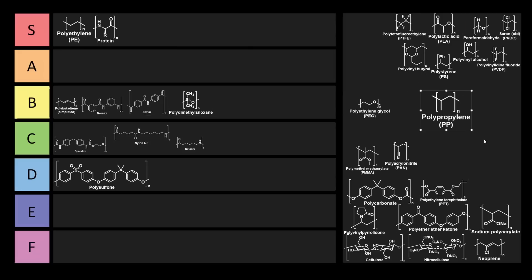Now polypropylene is another really commonly used polymer. Similar to polyethylene, it's a little bit more thermally resistive. But you can see consumer products absolutely everywhere with polypropylene. It's super ubiquitous. This one also belongs in S-tier.